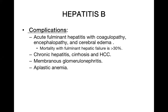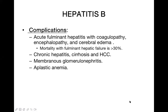Complications of hepatitis B include: acute fulminant hepatitis, which can kill the patient and results in acute hepatocellular failure; coagulopathy; encephalopathy; and cerebral edema. The mortality rate is more than 40%. Chronic hepatitis, cirrhosis of the liver, and hepatocellular carcinoma are known complications — that is why everyone is afraid when they hear the diagnosis of hepatitis B.